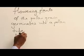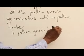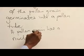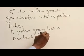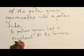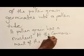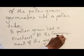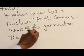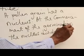A pollen grain has a nucleus. At the commencement of germination, the nucleus divides into two.